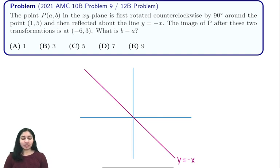Hi everyone, in this video we're going to be going through a problem from the 2021 AMC 10 and 12B. It states that the point P(a,b) in the xy-plane is first rotated counterclockwise by 90 degrees around the point (1,5) and then reflected about the line y equals negative x. We're told that the image of P after these transformations is (-6,3), and we're trying to find b minus a.